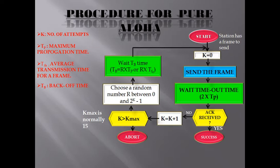Procedure for Pure ALOHA: a station has some data to send; it initializes its counter k equals to zero. If station A is transmitting its frame to station B, to confirm success we need to receive an acknowledgement. Tp is the maximum propagation time, and Tprop plus the acknowledgement time should be accounted for.